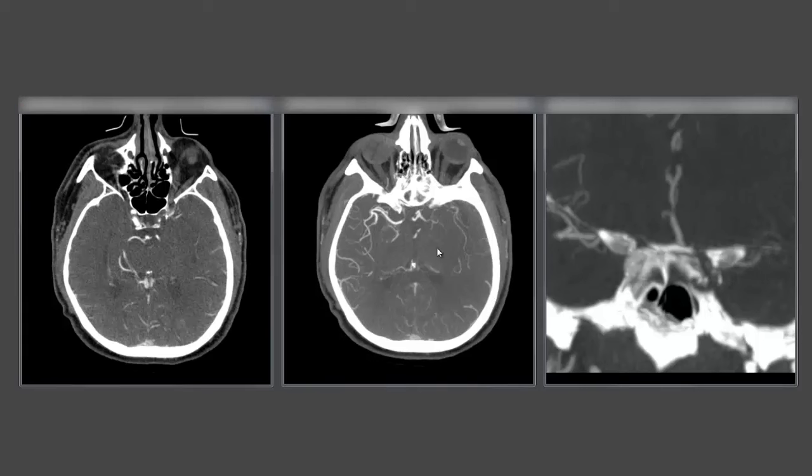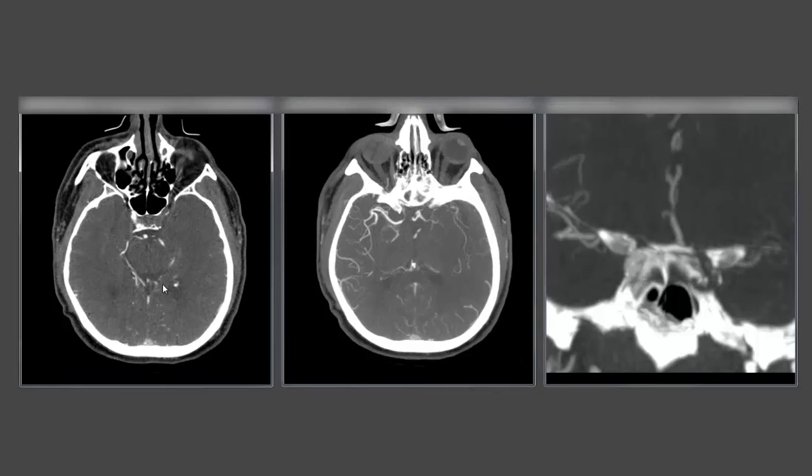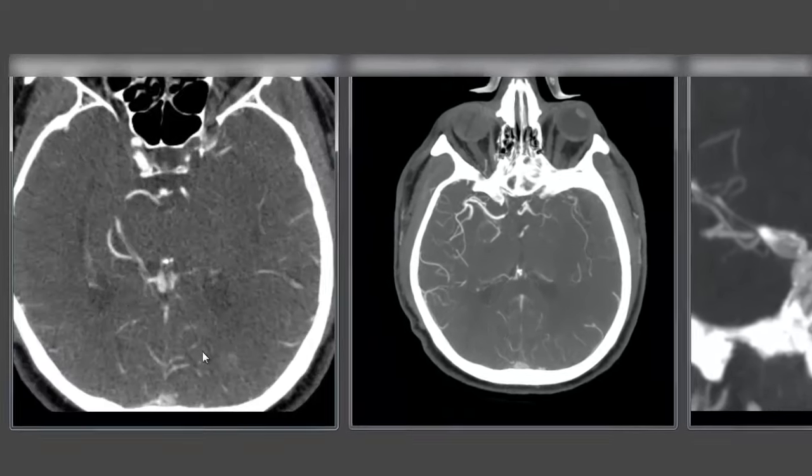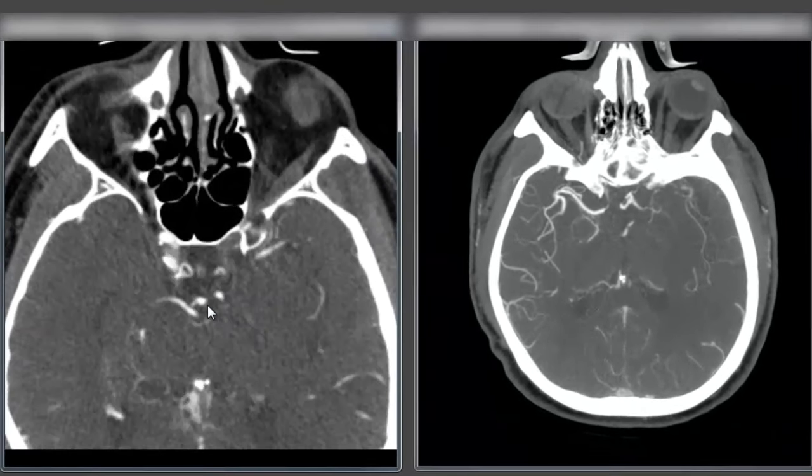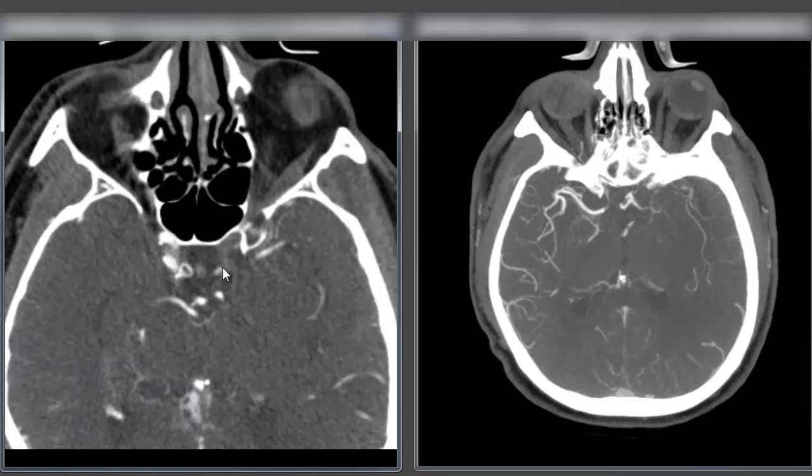So we have our source images, we have our thick MIP reconstructions in the axial and coronal planes. If we look at our source images right away we can see there's significant asymmetry in this patient presenting with an acute stroke with right hemiparesis, aphasia, and left gaze deviation.